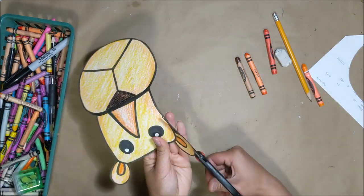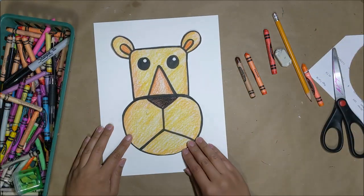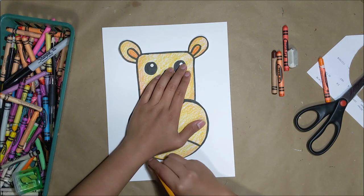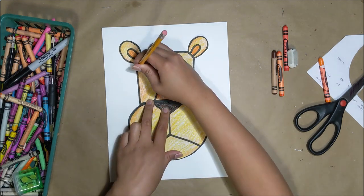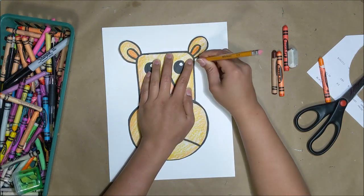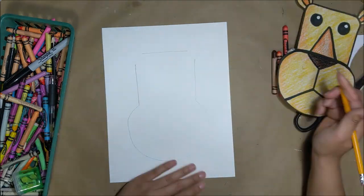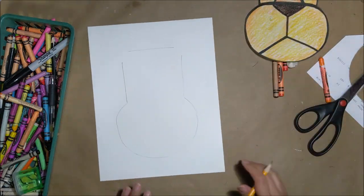Taking our second sheet of white paper we're going to trace the lion's head on there. We don't need to trace the ears so just skip over and not do the ears. Here I'm darkening the lines so it's just easier to see.